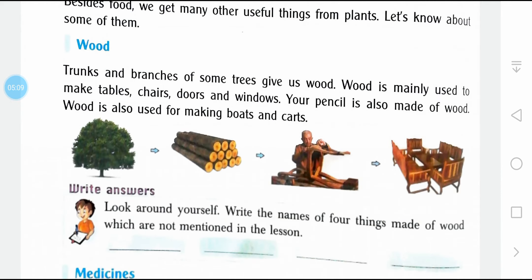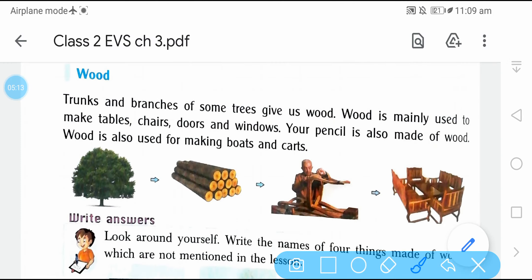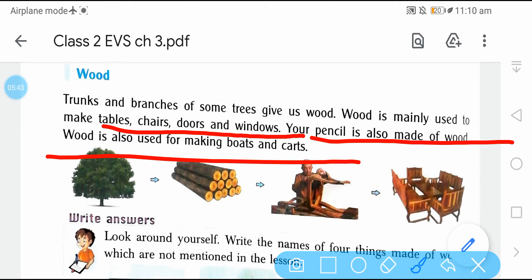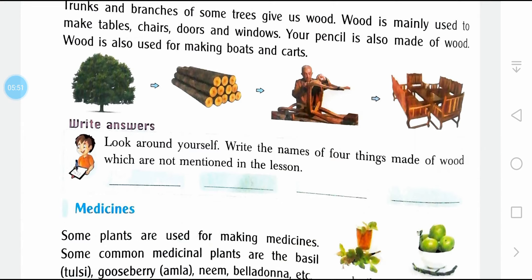The trunks and branches of some trees give us wood. Wood is mainly used to make tables, chairs, doors, and windows. Your pencil is also made of wood. Wood is also used for making boats and carts. Now look around yourself and write the names of four things made of wood that are not mentioned in the lesson.